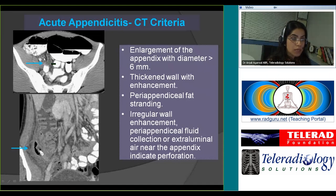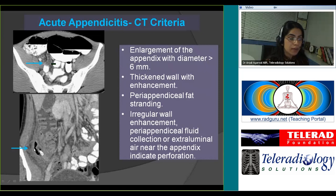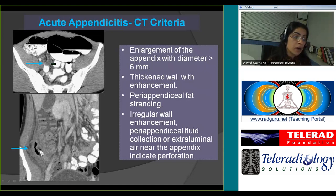One can also see thickening of the appendiceal wall with increased mucosal enhancement. You may also see peri-appendiceal fat stranding — this 'dirty fat' indicated by the blue arrows. If you see irregular wall enhancement, peri-appendiceal air or fluid, you can confidently suggest the presence of perforation. There is a very high positive correlation between the presence of an appendicolith in appendicitis and perforation or impending perforation.